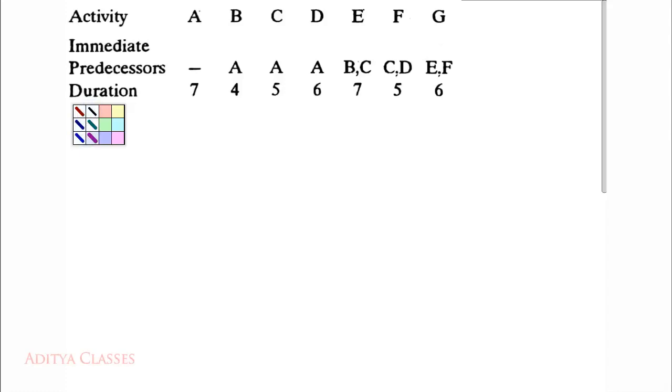What do we analyze before starting the network? Who starts my network? All the activities that do not have a predecessor. If we have a look at A, A does not have a predecessor.